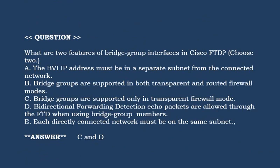Next question: What are two features of bridge group interface in Cisco FTD? Choose two options. Option A: The BVI IP address must be in a separate subnet from the connected network. Option B: Bridge groups are supported in both transparent and routed firewall modes. Option C: Bridge groups are supported only in transparent firewall mode. Option D: Bi-directional forwarding detection echo packets are allowed through the FTD when using bridge group members. Option E: Each directly connected network must be on the same subnet. Correct answer is Option C and Option D.